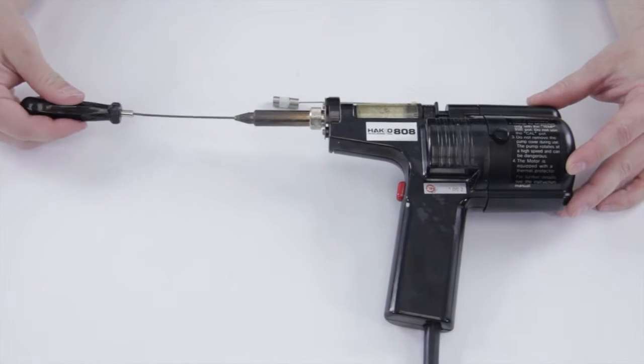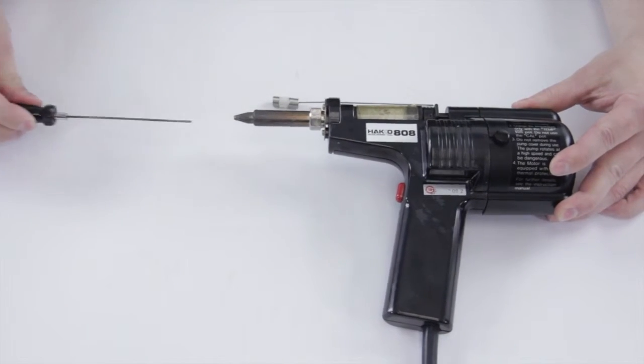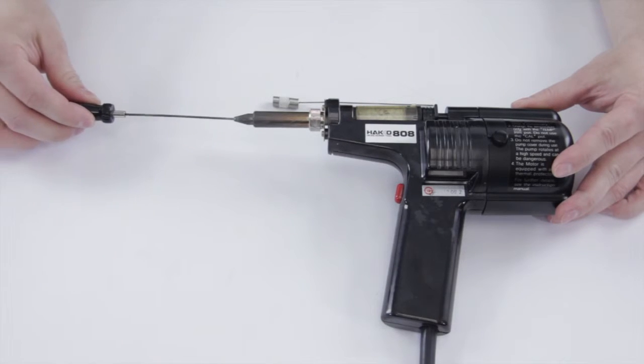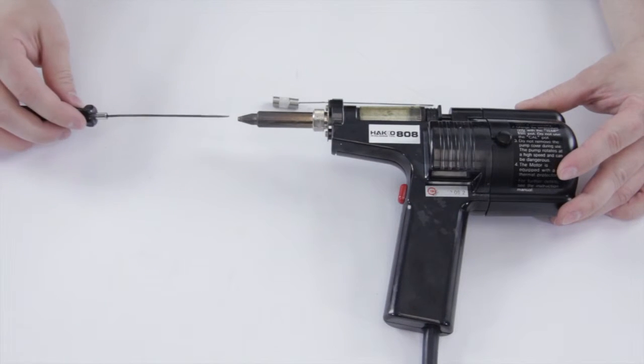You just take this screwdriver, put it in there and run it all the way down. And then repeat that a few times. You'll notice on yours that you'll find lots of dirt and flux coming back out and that's good.